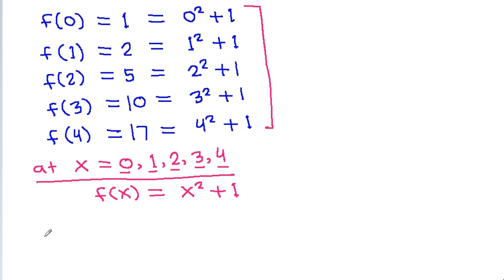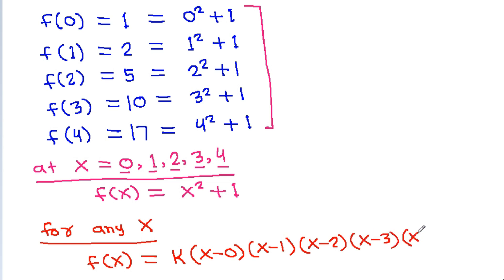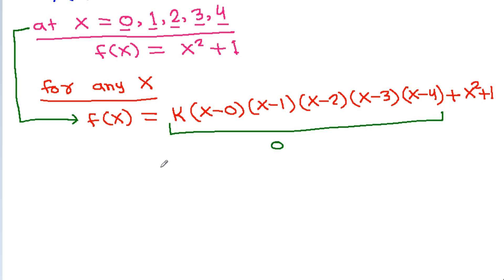So, for any x, f(x) will be equal to some constant k times x(x−1)(x−2)(x−3)(x−4), plus x² + 1. Because at x = 0, 1, 2, 3, 4, this product portion will be 0, so f(x) will equal x² + 1 at those points.